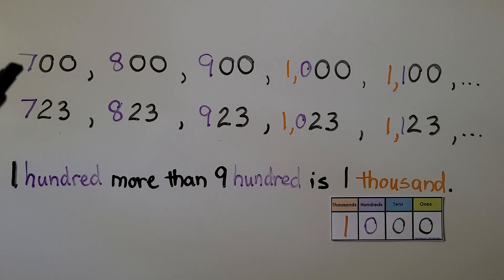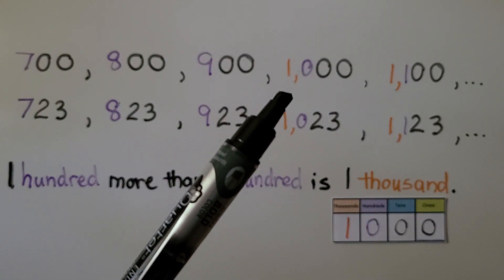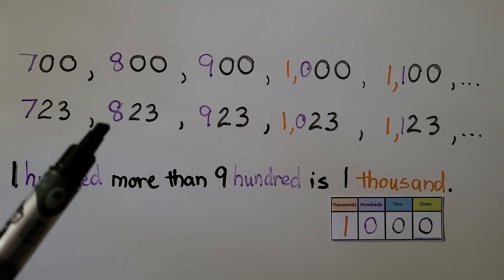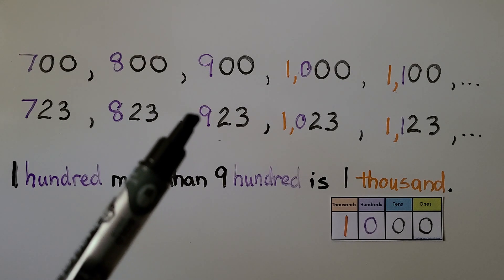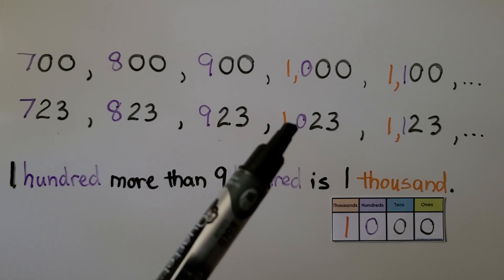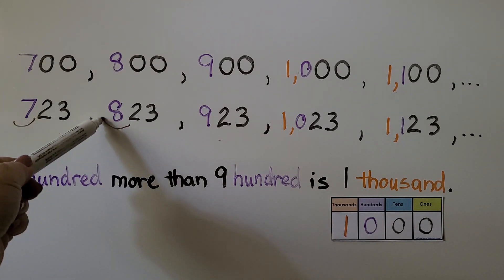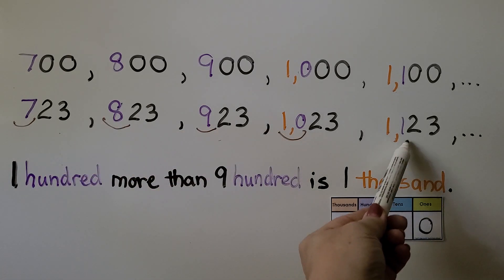Here we're counting on by hundreds: 700, 800, 900. The next number — 100 more — would be 1,000, and 100 more than that would be 1,100. With 723: 100 more is 823, then 923. To go 100 more we get a 0 in the 100s place and a 1 in the thousands place, giving 1,023. Then 100 more gives 1,123. We can group to see: 700, 800, 900, 1,000, 1,100.